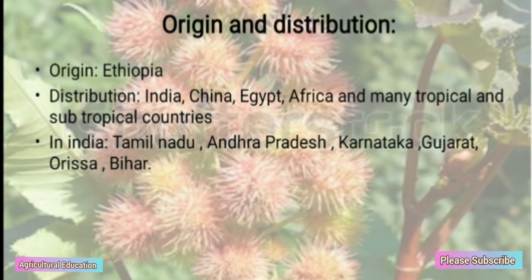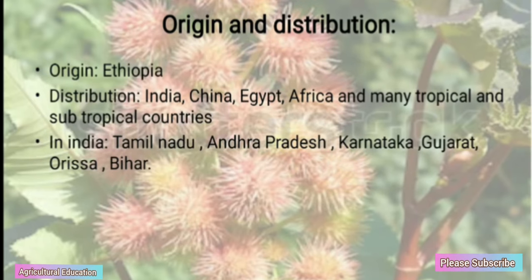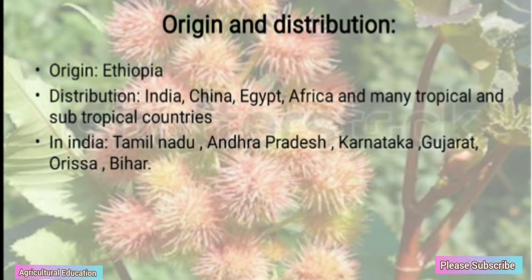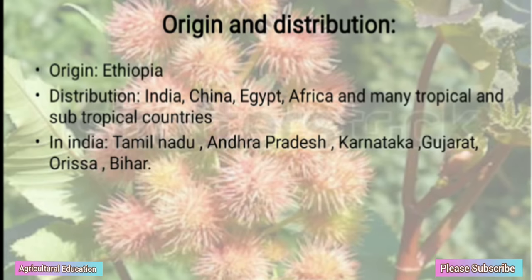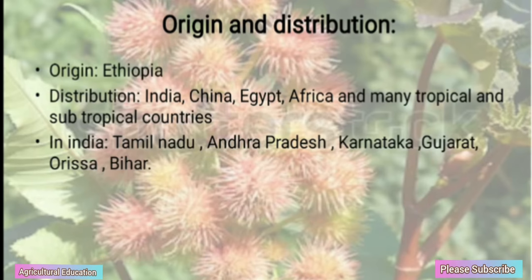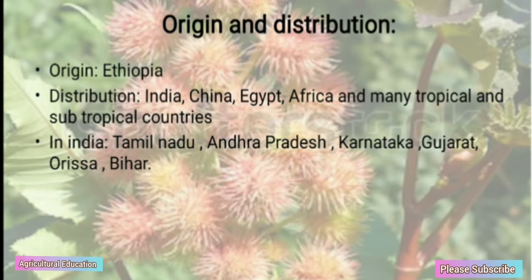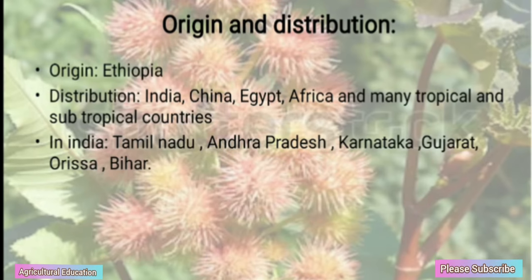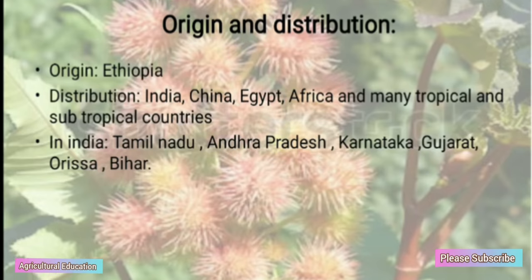Origin and Distribution — Origin: Ethiopia. Distribution: India, China, Egypt, Africa and many tropical and subtropical countries. In India: Tamil Nadu, Andhra Pradesh, Karnataka, Gujarat, Orissa, and Bihar.